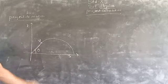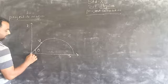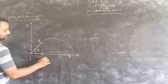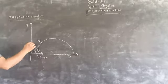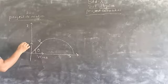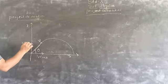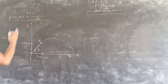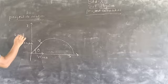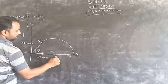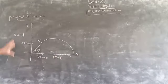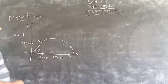We take the two components of the velocity: v cos theta along the x-axis and v sin theta along the y-axis. Along the y-axis, acceleration is acting vertically downward, equal to g (gravitational acceleration), while along the x-axis there is no acceleration.